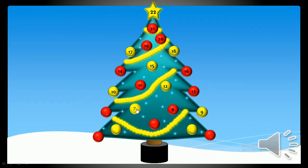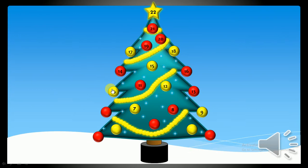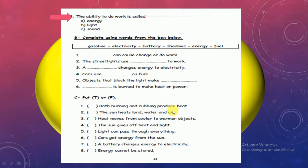Number 7, what makes street lights work? Electricity, heat or rain? Electricity, good job. Okay, number 8. This is page 33. The ability to do work is called energy. Good job.